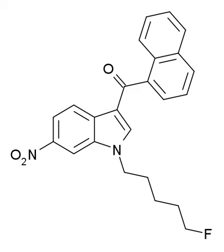AM1235, 1-(5-fluoropentyl)-3-(naphthalen-1-yl)-6-nitroindole, is a drug that acts as a potent and reasonably selective agonist for the cannabinoid receptor CB1.